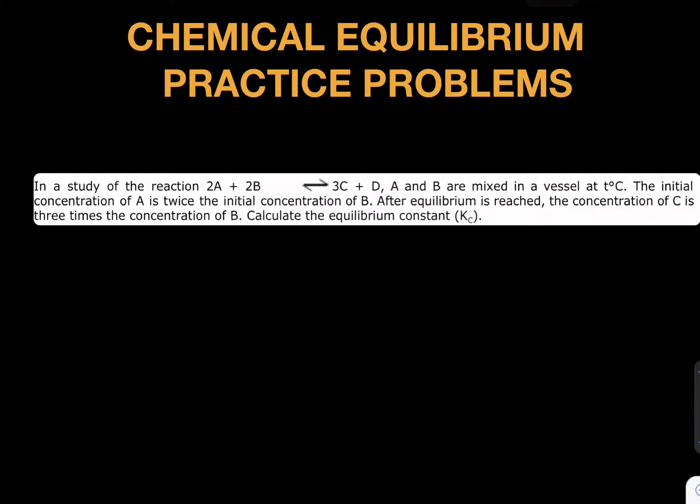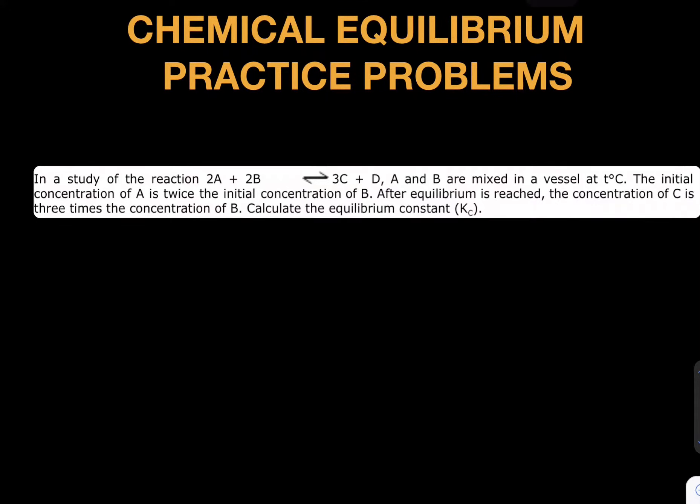Chemical equilibrium practice problem. I'm bringing up this first question. In a study of a reaction 2A + 2B gives 3C + D, let's write 2A + 2B gives 3C + D. A and B are mixed in a vessel at t degrees Celsius.